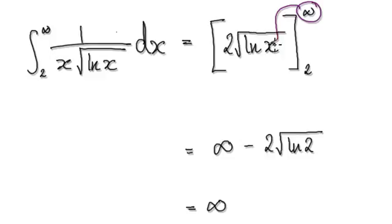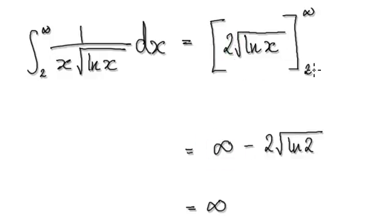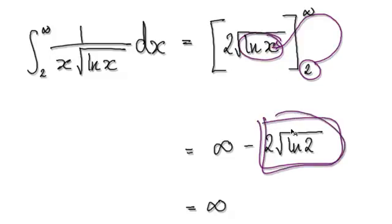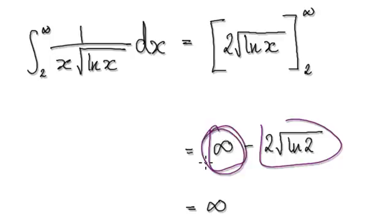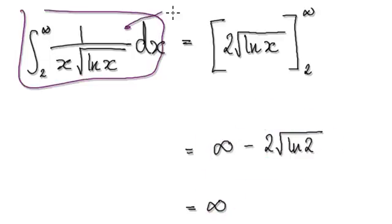Now put a very large number into the expression 2√(ln x). When you take the natural log of a very large number, you get a very large number. Then square rooting that very large number still gives a very large number, and multiplying by two keeps it very large. So as the upper limit goes to infinity, this whole expression goes to infinity. When you plug in the lower limit of two, natural log of two is a finite number, square root of that is a finite number, times two is still finite. So overall, it is infinity minus a finite number, which is infinity — meaning the integral diverges.